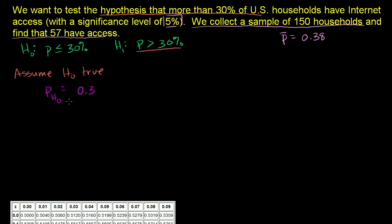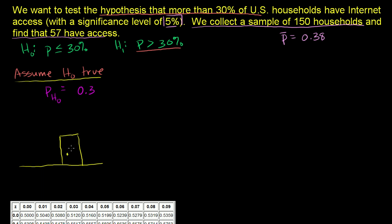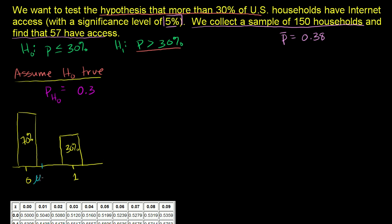So to refresh, we're going to assume a population proportion of 0.3. If we think about the distribution — sometimes it's helpful to draw these things — our population distribution has 30% with internet access and 70% without. This is just a Bernoulli distribution. The mean is going to be the same as the proportion with internet access, so the population mean assuming our null hypothesis is 0.3.